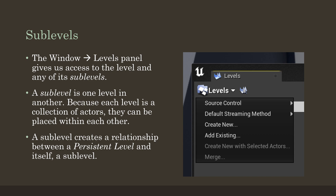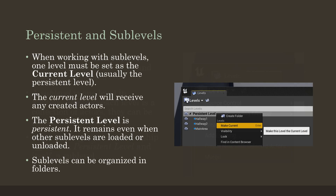When we do this with levels, we create an interesting relationship between a persistent level — the thing that contains the other things — and a sub-level, which is the level itself, potentially containing other levels or actors. We need to think about which thing we're editing. When we move back to Unreal, we need to know what the current level is, which is usually the persistent level. The current level will receive any created actors.